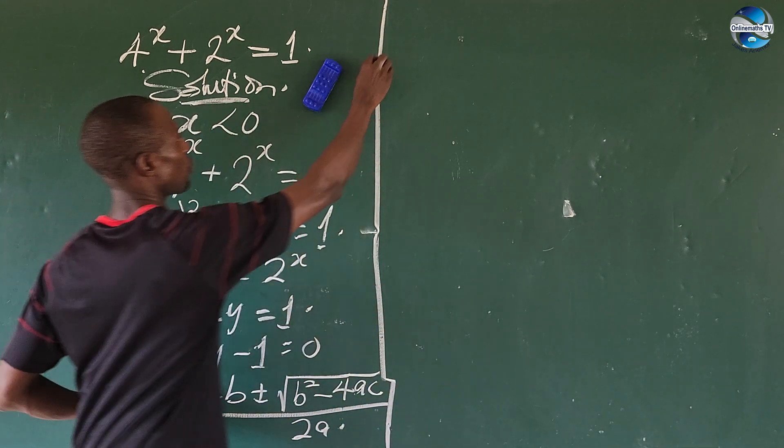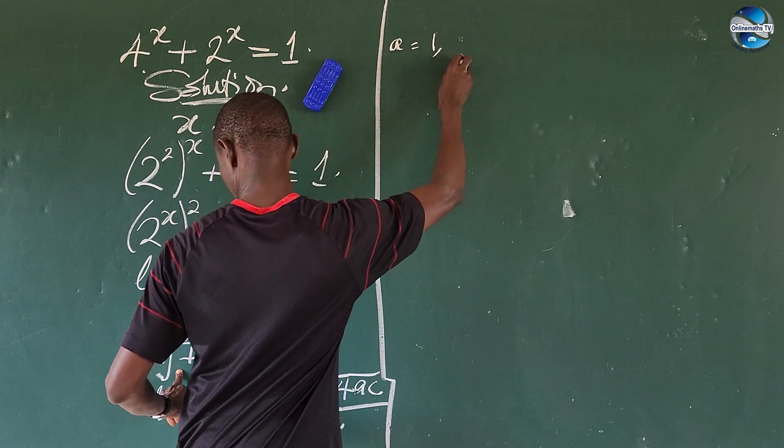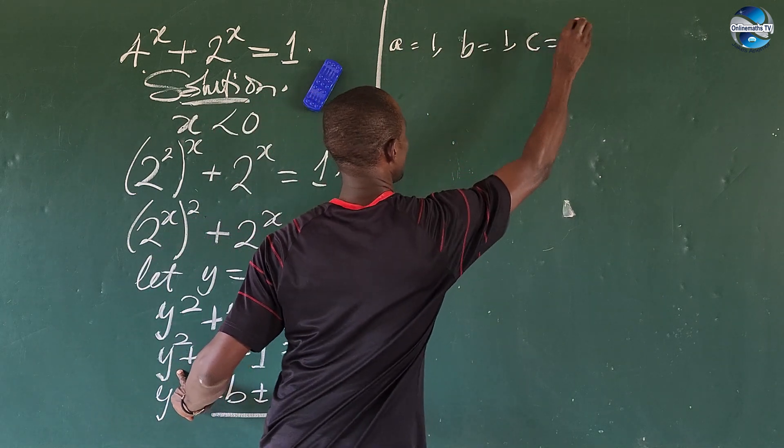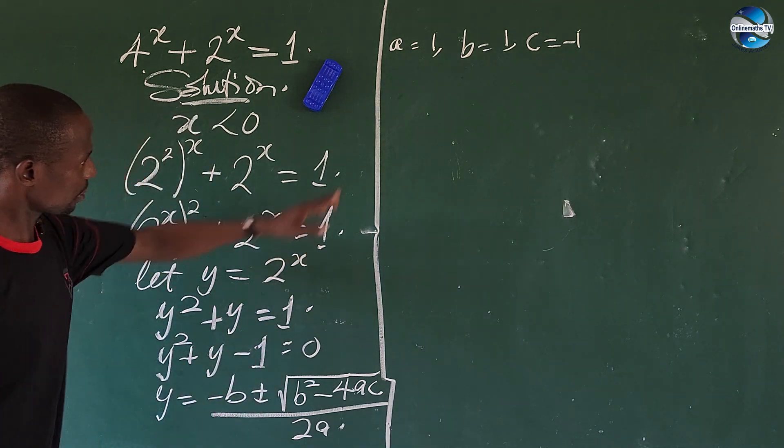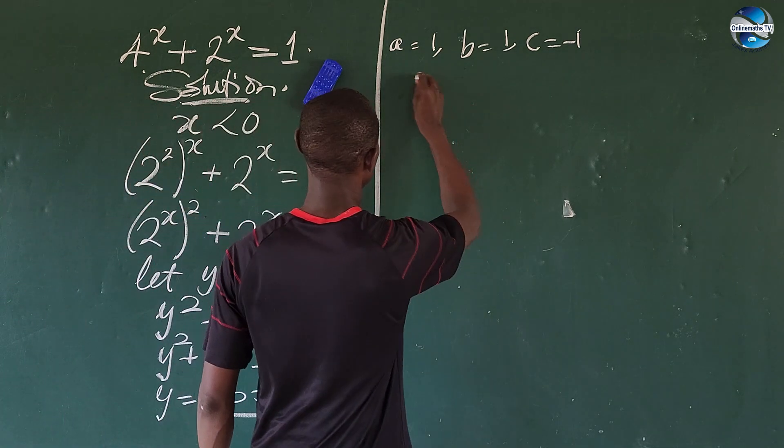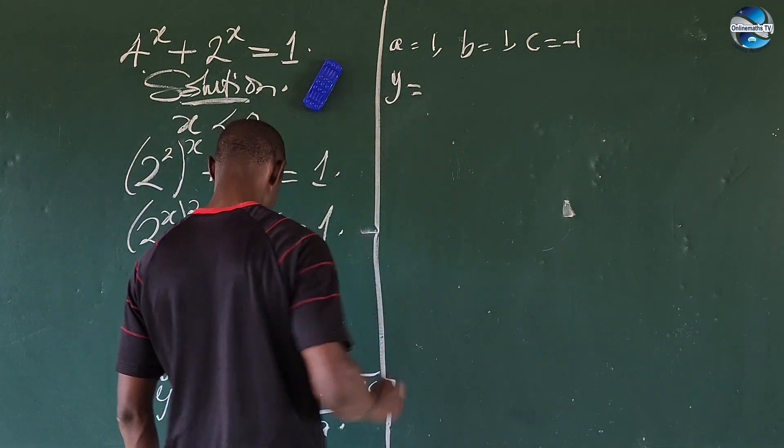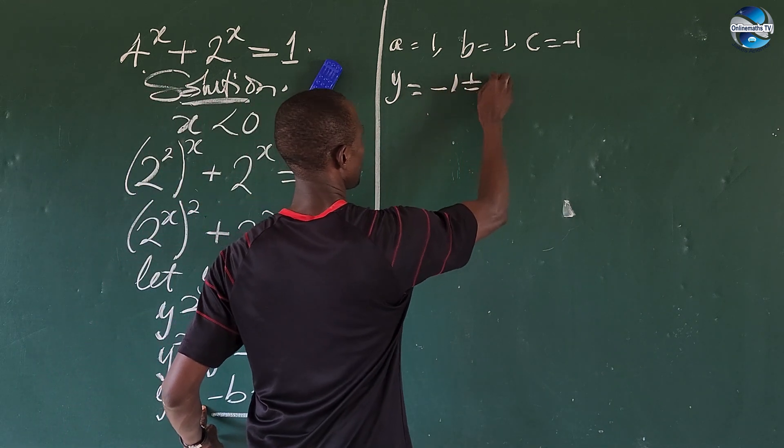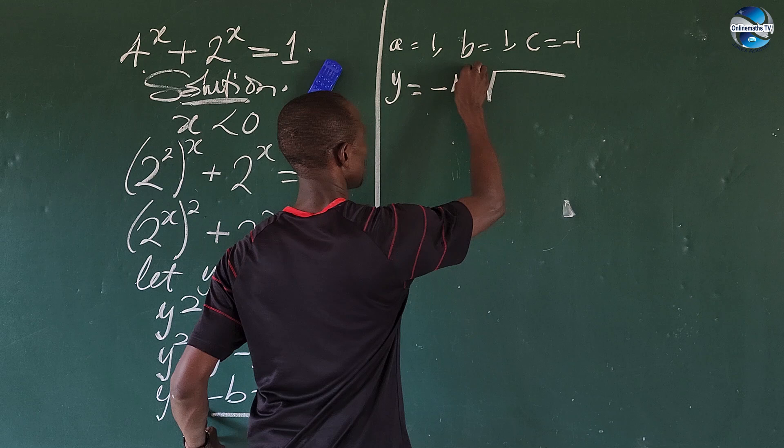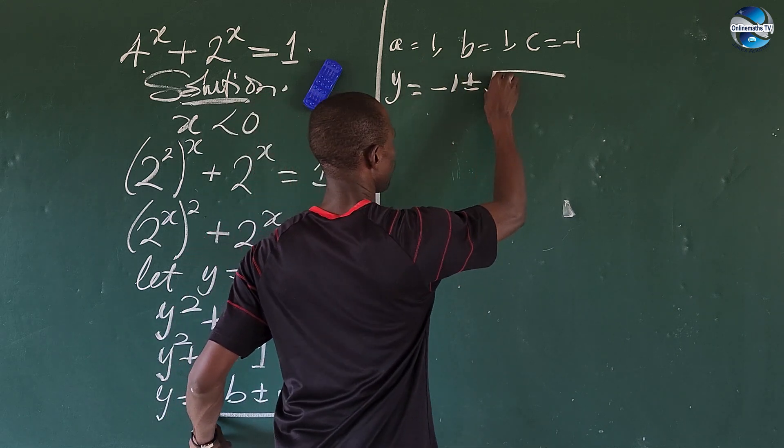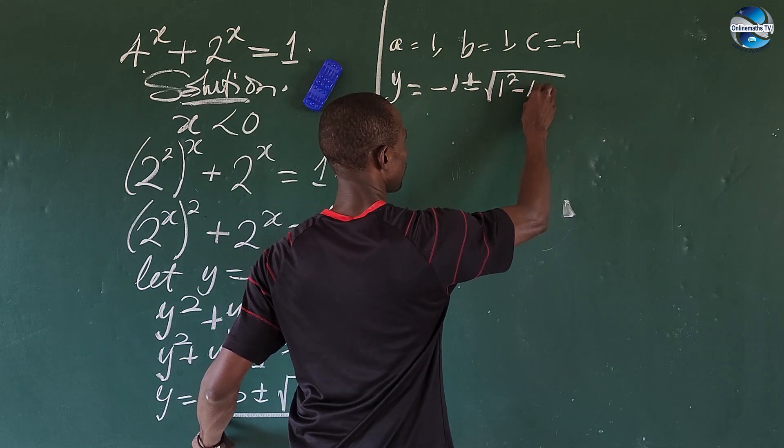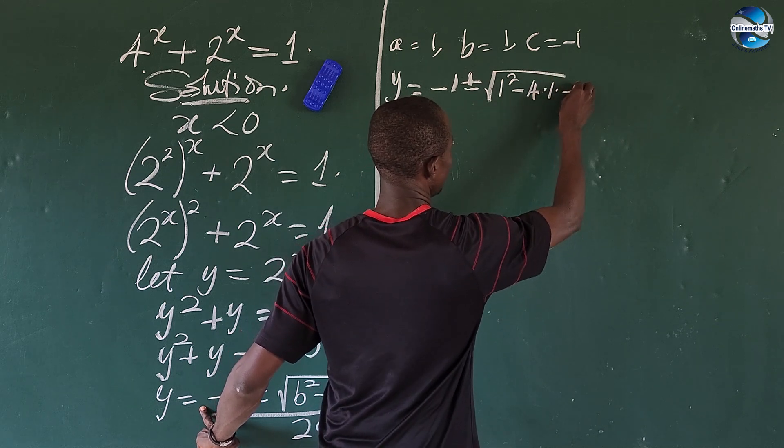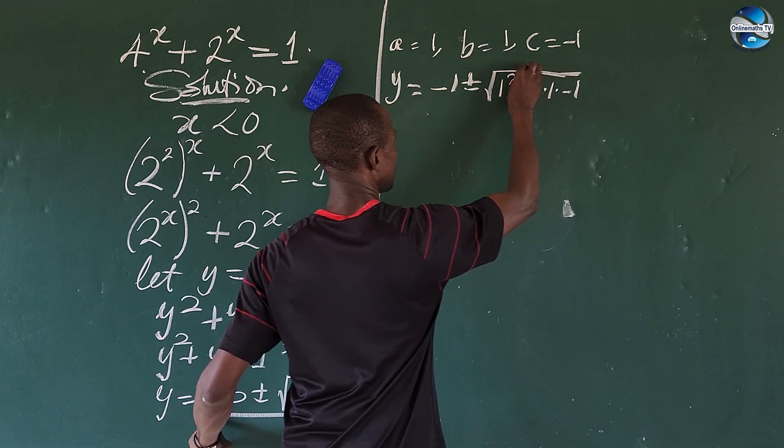What is our a? Our a is 1, b is equal to 1, and c is equal to minus 1. So let's substitute and see what this gives us. We've got y equal to minus 1 plus minus the square root of 1 squared minus 4 times 1 times our c is minus 1, all over 2 times 1.